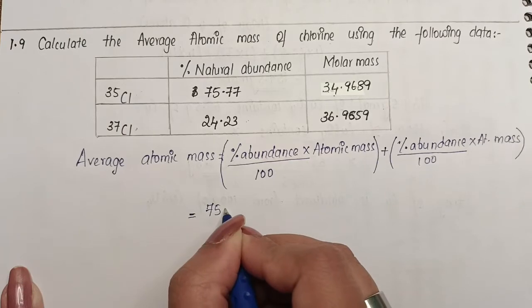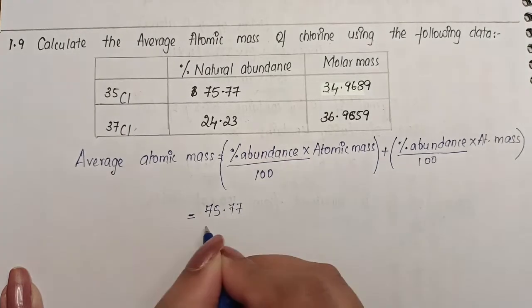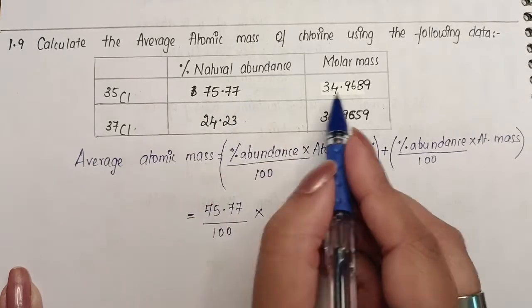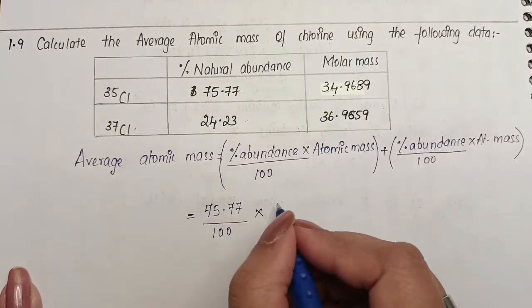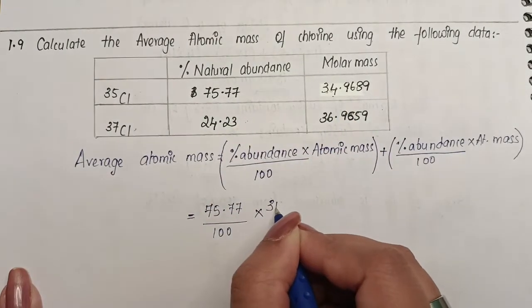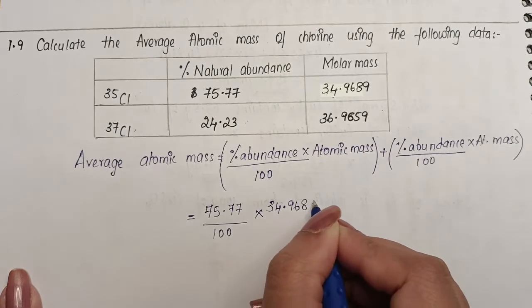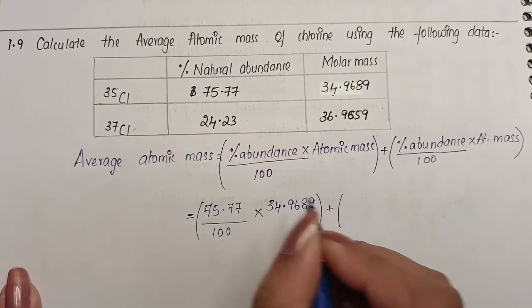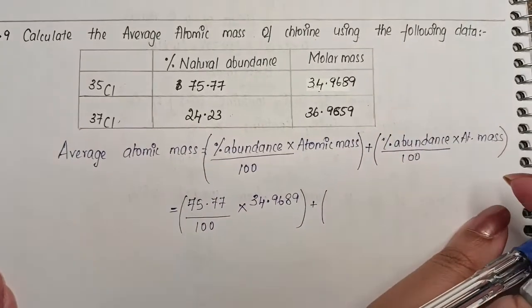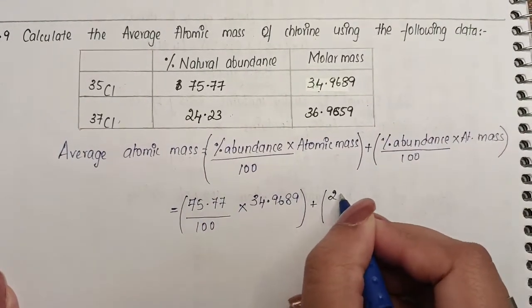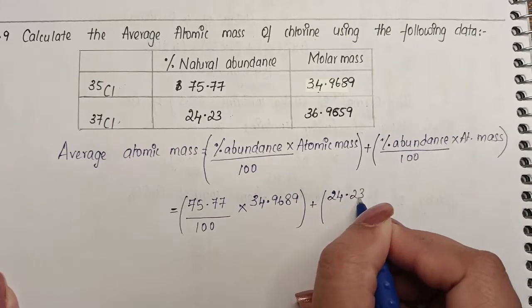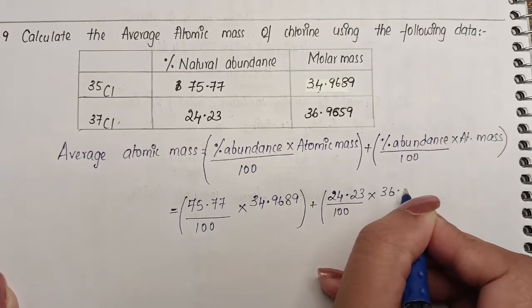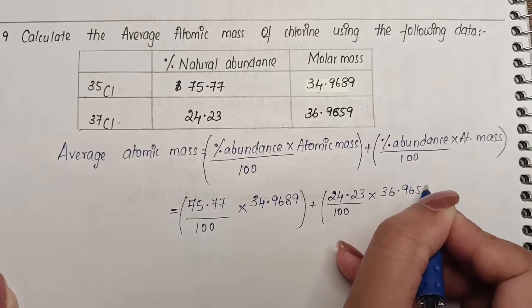For the first isotope, percentage abundance is 75.77, divided by 100, multiplied by its atomic mass of 34.9689. For the second isotope, we have 24.23 divided by 100, multiplied by the atomic mass 36.9659.